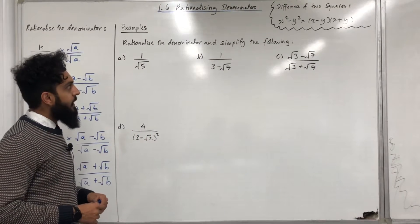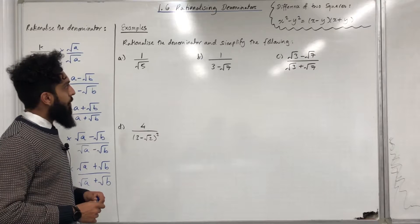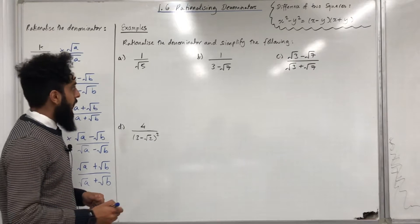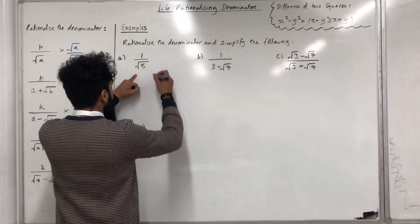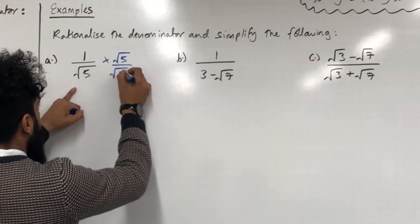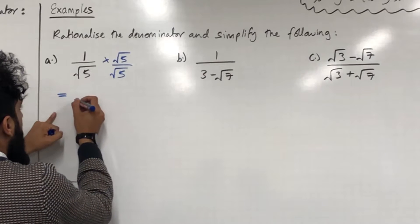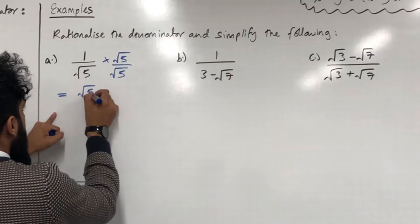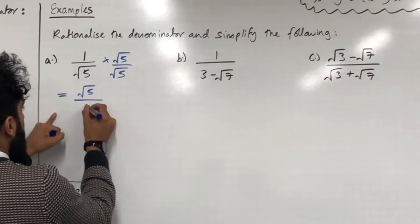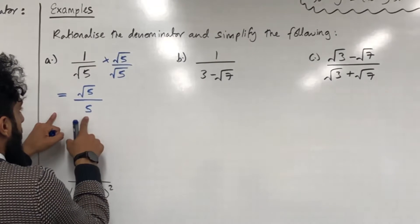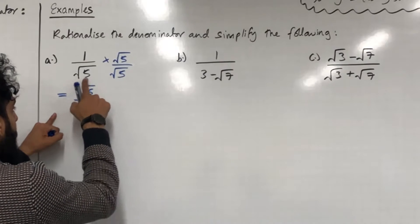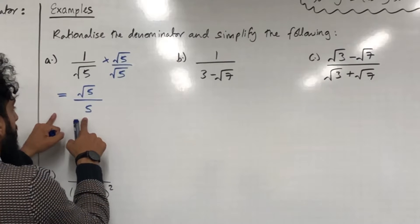Here are some examples — rationalise the denominator and simplify the following. We have parts a, b, c, and d. For part a, we multiply by √5 over √5. 1 multiplied by √5 is √5, over √5 multiplied by √5 which is 5. There is no square root in the denominator, so this fraction is rationalised.